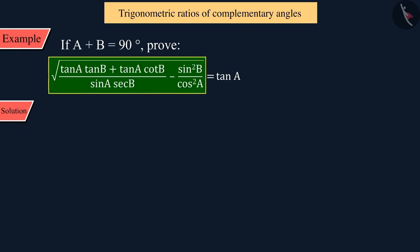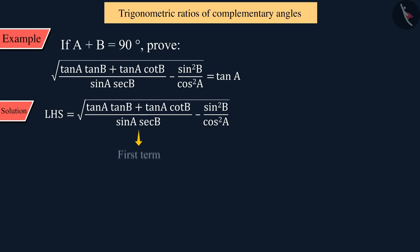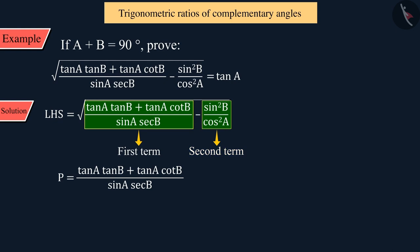Let us discuss the left side of the equation. For easy understanding, we represent the first term of the square root with P and the second term with Q, where the angles A and B are acute angles. This can be expressed as equation 1.